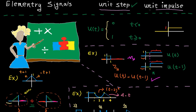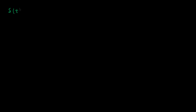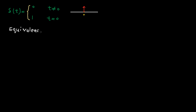Now let's talk about the unit impulse function. As the name shows, this is an impulse. This signal is 0 everywhere except at the origin, which is 1. Here is the shape. This function has two interesting properties, and I'm going to talk about both of them in this tutorial.